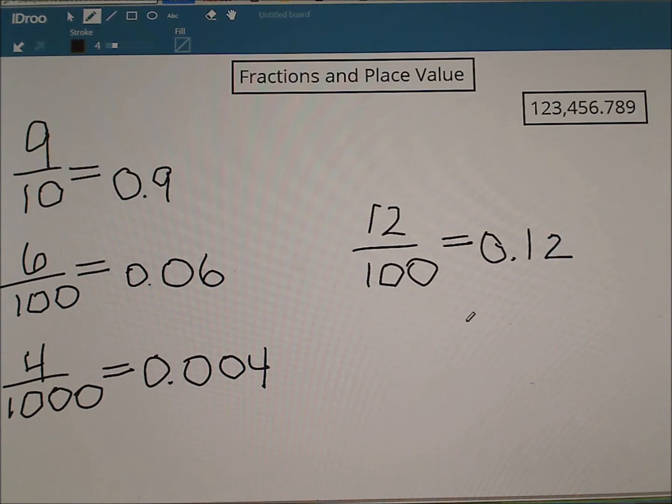Let's do a recap. When you're going from a fraction to a decimal, you want to consider your place value. Look at your denominator: if it's 10, that's the tenths place; 100, hundredths place; 1000, thousandths place. Then your numerator is going to tell you what value to actually write in that place value.